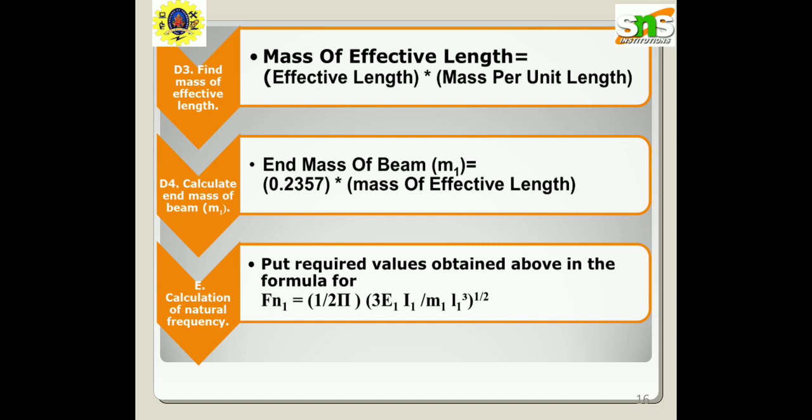The calculation of natural frequency uses the basic frequency equation: fn = (1/2π)·√(3EI / M₁L₁³).